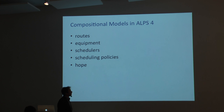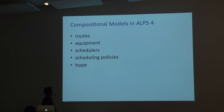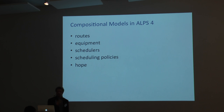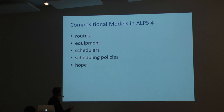It's just regular, rigorous, systematic domain modeling, and it's compositional — you can assemble smaller routes into larger routes using the concept of Q-time zones. We ended up looking for compositional models in many different aspects of the system, and found it in surprising places: in routes, in equipment modeling, in schedulers, in scheduling policies, and in a notion called 'hope' that I want to talk about.